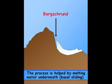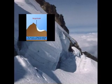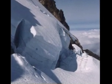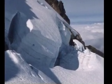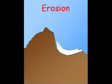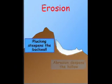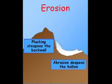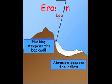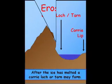Water often enters the glacial system via the bergschrund between the headwall and the back of the glacier. Glacial erosion happens in two ways: plucking steepens the backwall of the corry, while abrasion deepens the hollow.